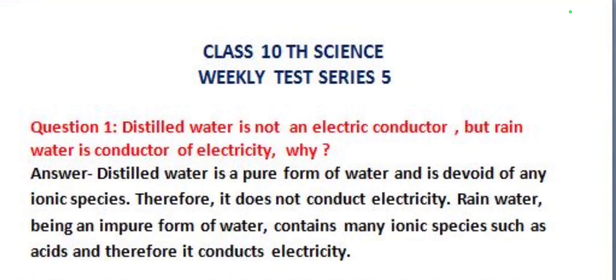Our first question is: distilled water is not an electric conductor, but rain water is a conductor of electricity. Why? Its answer is: distilled water is a pure form of water and is devoid of any ionic species. Therefore, it does not conduct electricity. Rain water, being an impure form of water, contains many ionic species such as acids, and therefore it conducts electricity.